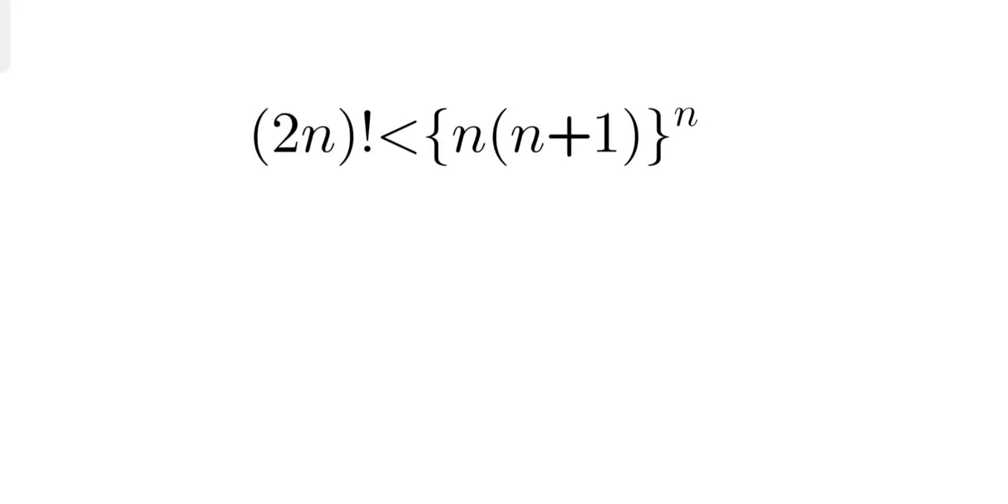We'll split 2n factorial into two products: the even product and the odd product. Let's do it. First will be the odd product, 1·3·5 all the way up to (2n-1), and then the even product 2·4·6 all the way up to 2n.